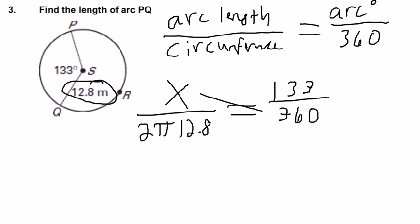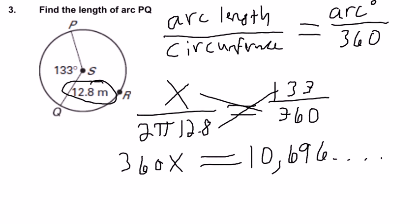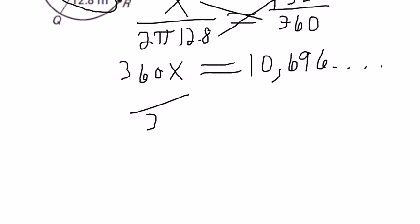So on one side you have x times 360. On the other side you have 2π times 12.8 times 133. I would usually just type that in my calculator, so 2 times π times 12.8 times 133 equals, and I get about 10,696, but it actually keeps going. I'm going to keep that number on my calculator, because the very next step is to divide both sides by 360.